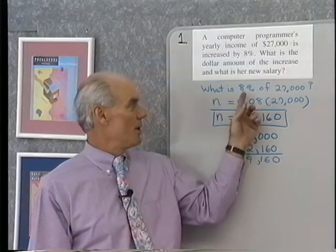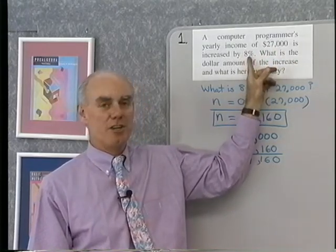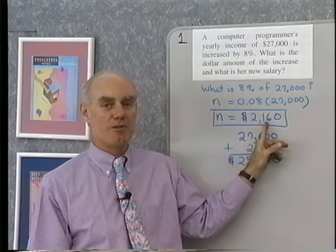So what we have is this. A programmer is making $27,000. They get an 8% increase. That 8% increase turns out to be a dollar amount of $2,160.